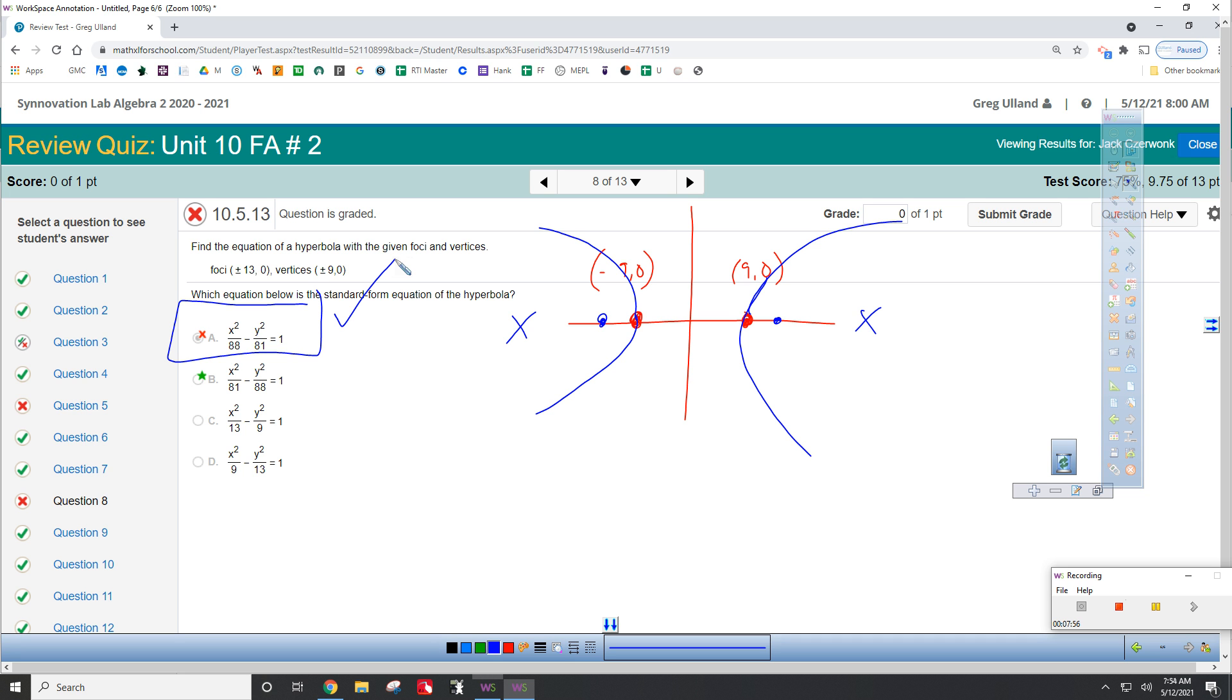The question becomes, how do we find out what... So, A goes with the vertex. So, this, since it's x, has got to be 81 down here. Now, c is the distance, excuse me, between the vertex and the focus.